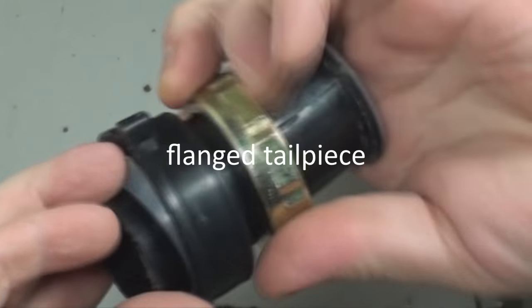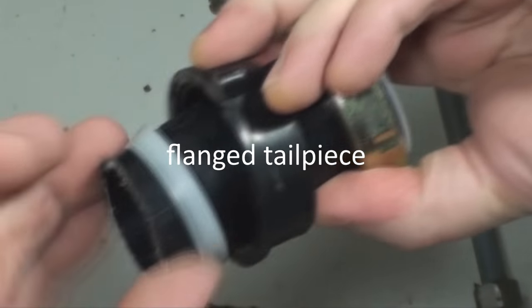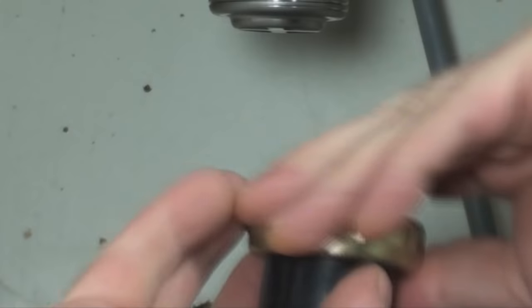To reassemble, drop your top hat gasket and your beveled gasket onto your flanged end piece with the water trap nut in place.